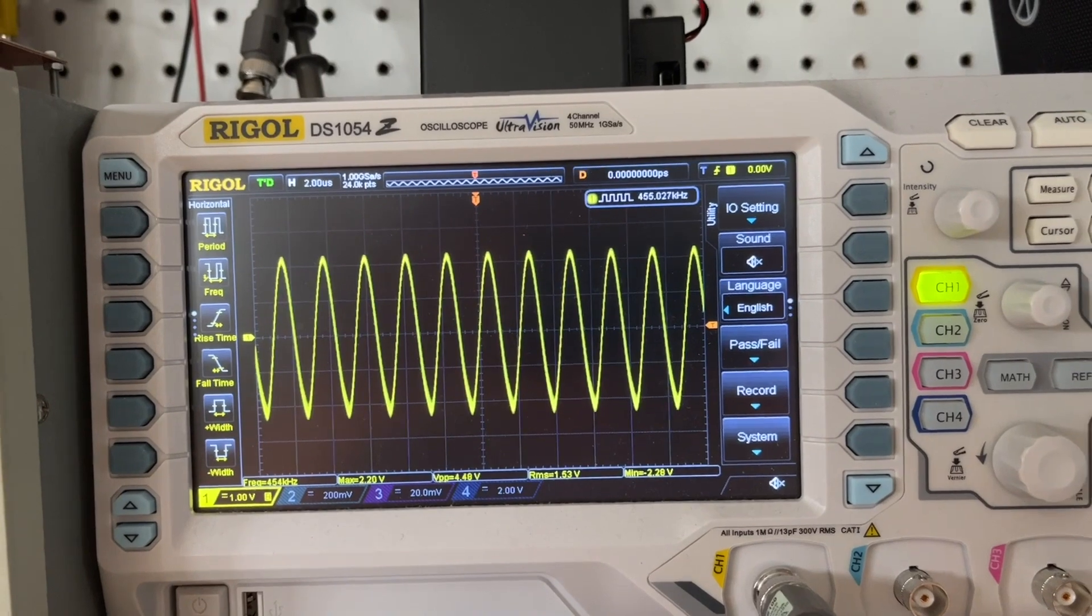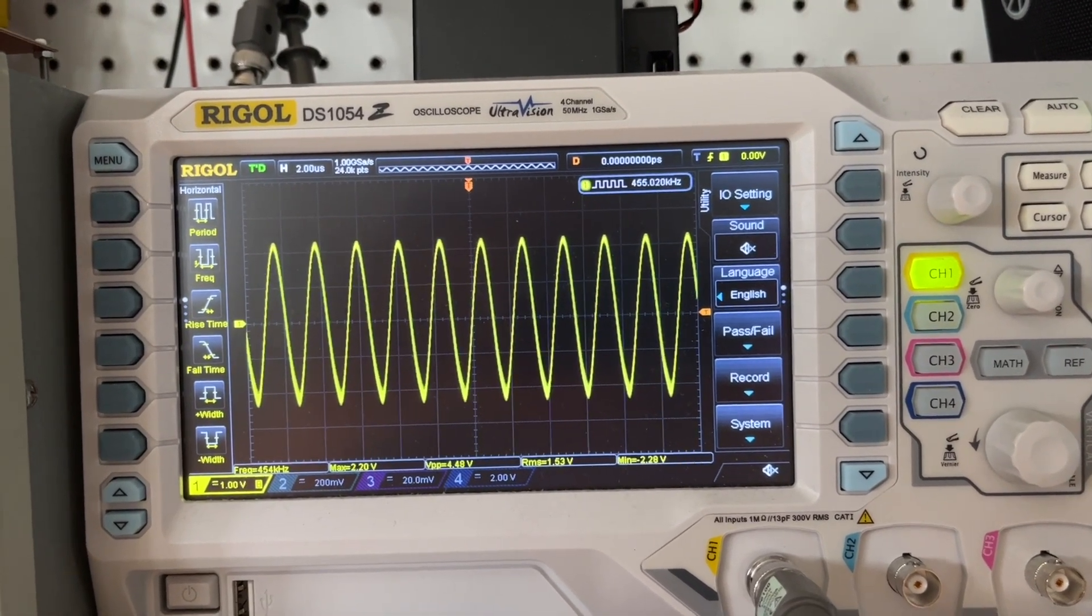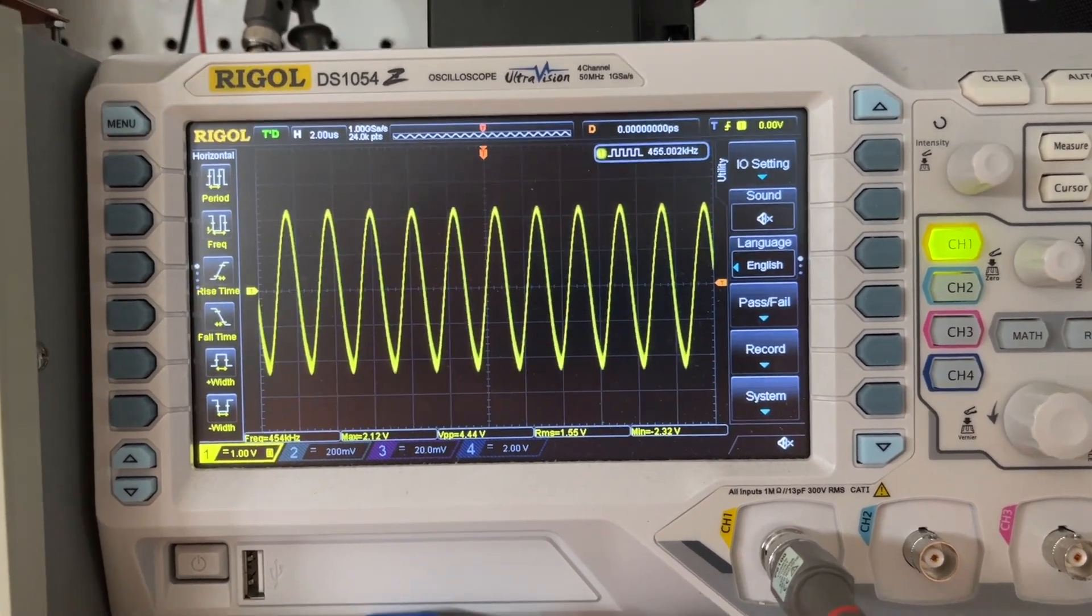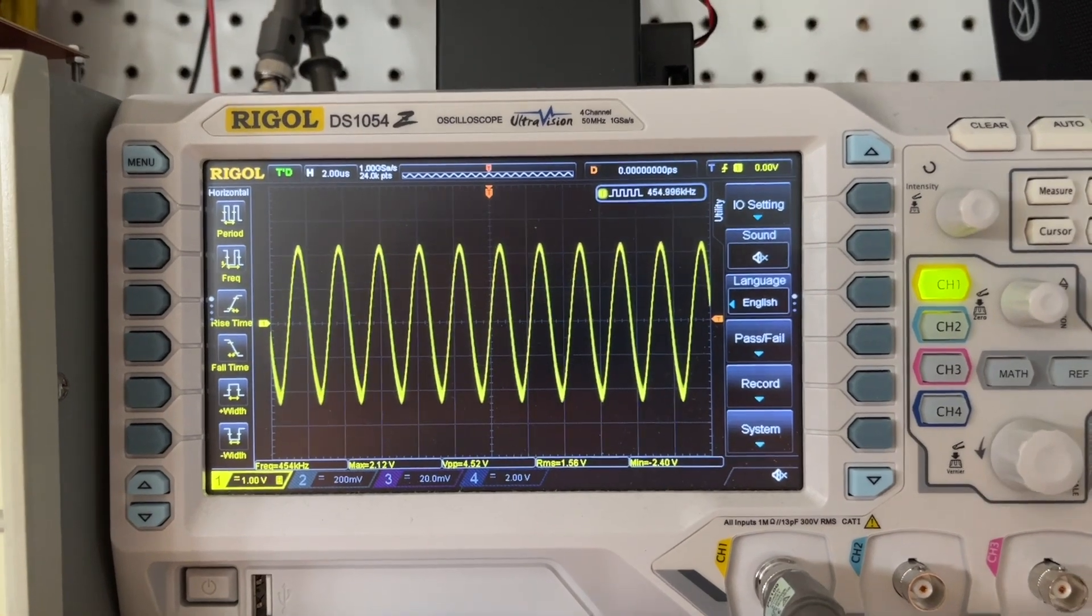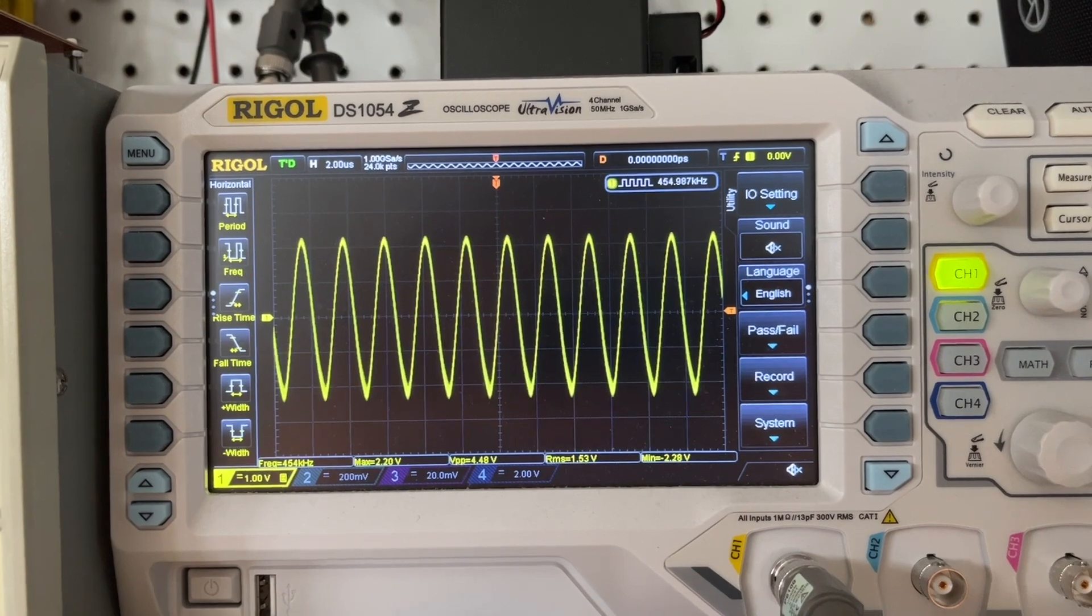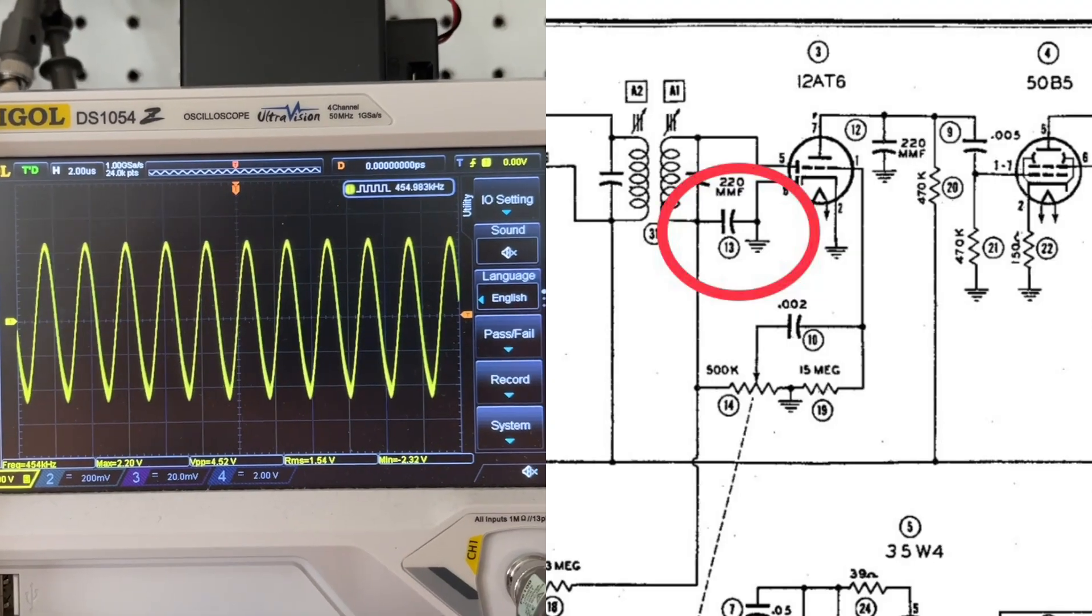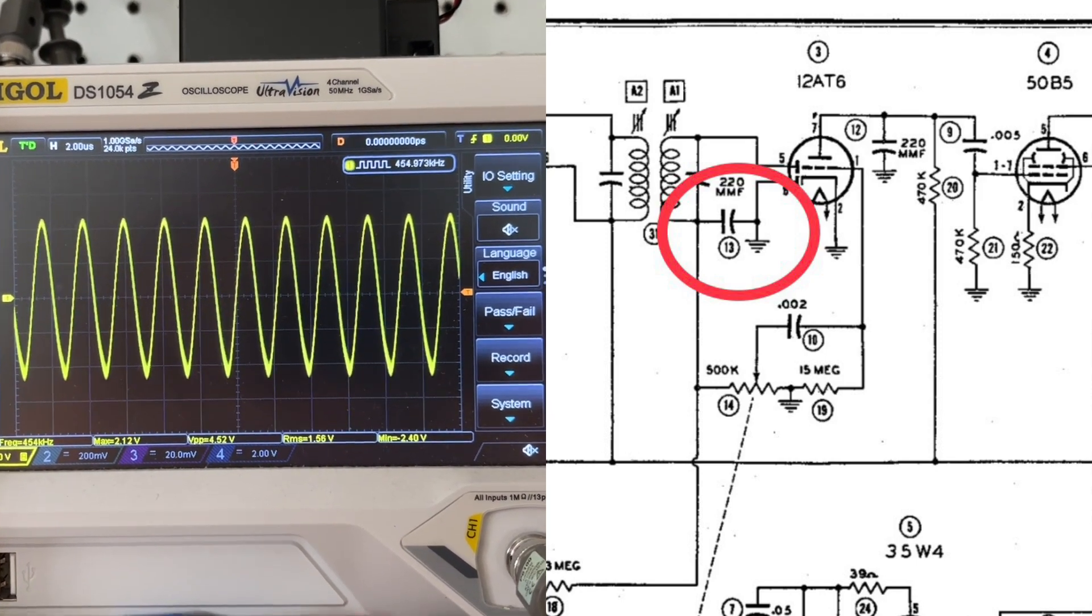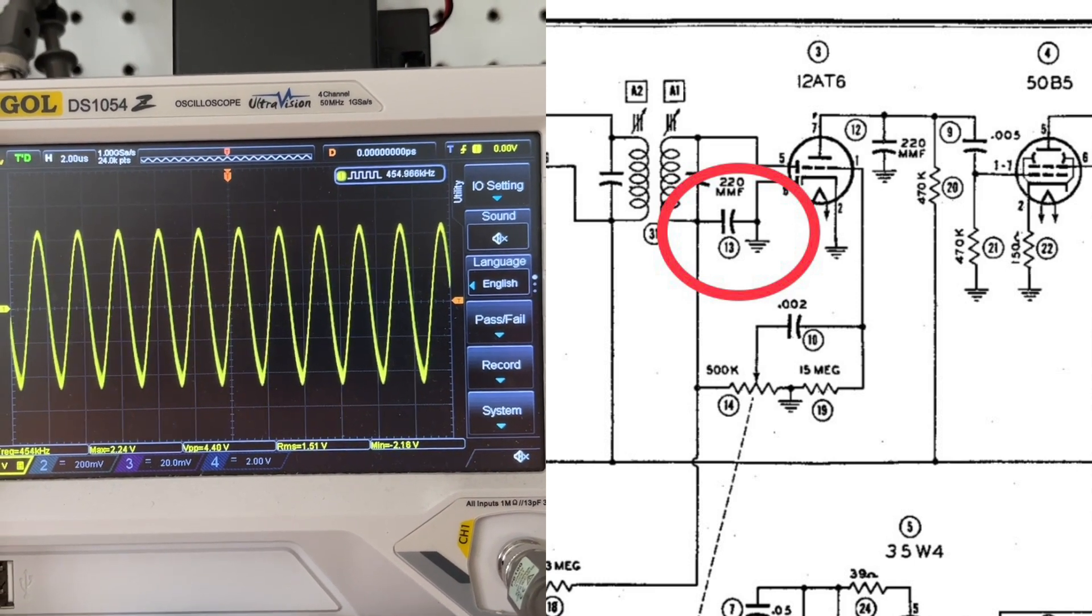You can see the scope. And again, I'm going through a bypass cap off of the high side of the volume control, and this is the IF frequency passing through on the audio side. So again, this particular capacitor called out C13 will mitigate or take the IF frequency to ground.